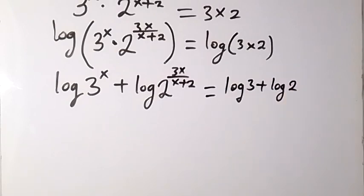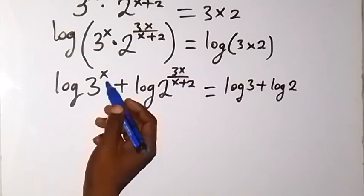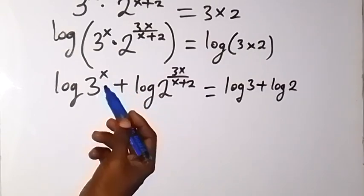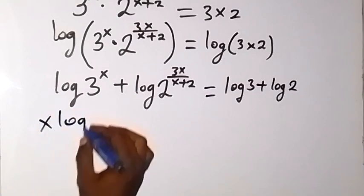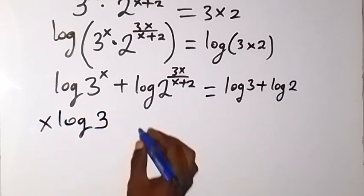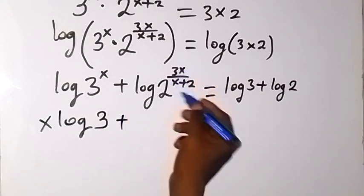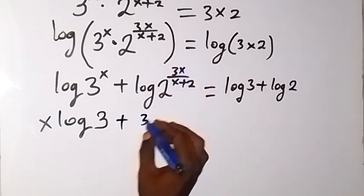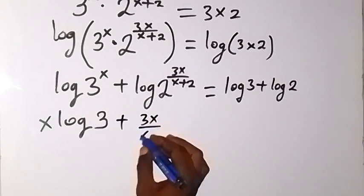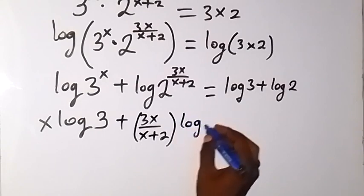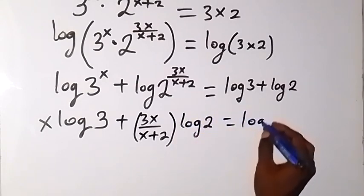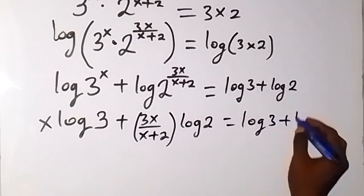Let's bring the like terms together. But before then, we can apply the power rule of logarithms. When we have a power, the power can come to the front: this is x log 3, then plus, the power 3x over x plus 2 comes to the front as well, giving 3x over x plus 2 times log 2. So that equals log 3 plus log 2.